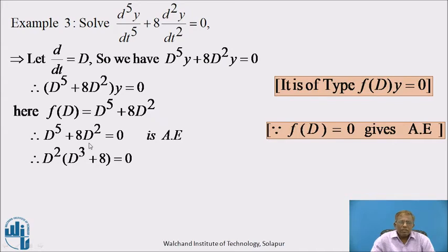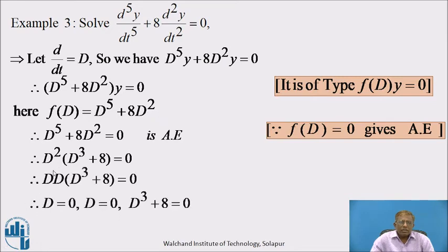Solve by factorizing the left side. D² is common, giving D²(D³ + 8) = 0, written as D · D · (D³ + 8) = 0. The product equals zero implies D = 0, D = 0, and D³ + 8 = 0. We have to solve D³ + 8 = 0 separately to get another three roots.